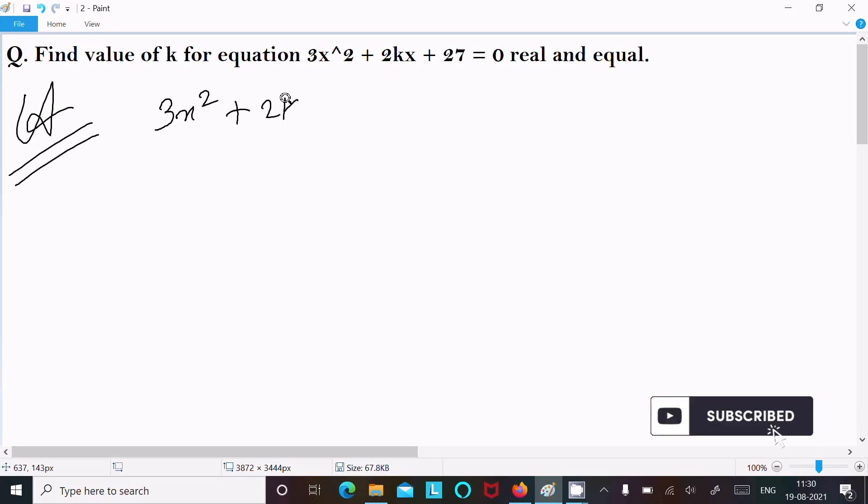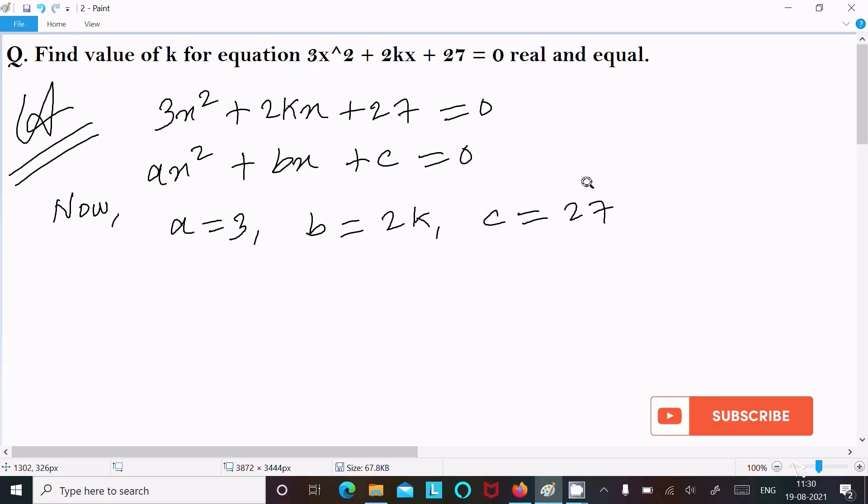Now I am going to compare with the general form of quadratic equation, that is ax² + bx + c = 0. Here we can easily identify the values: a = 3, b = 2k, and c = 27.